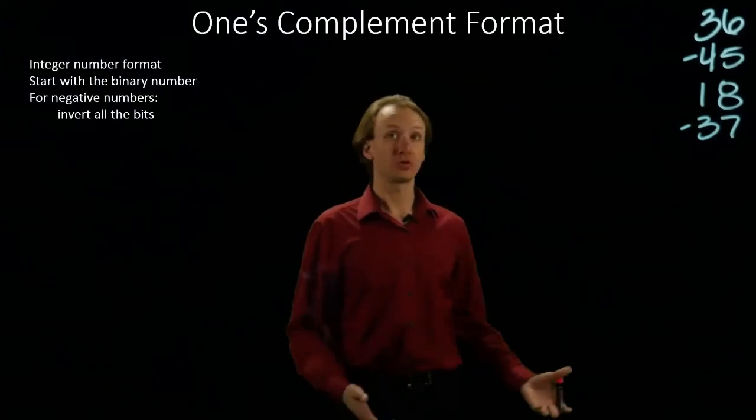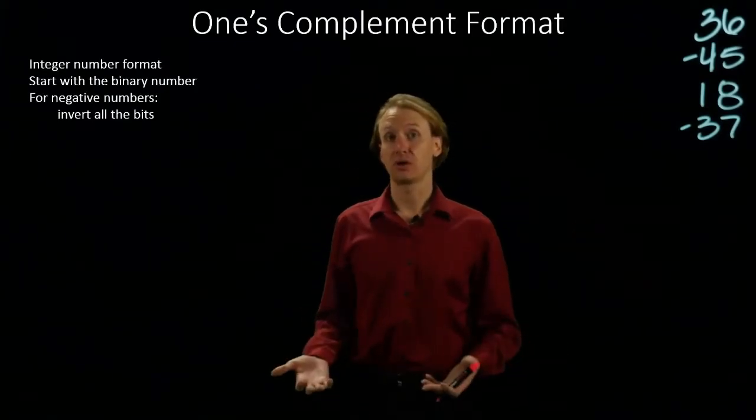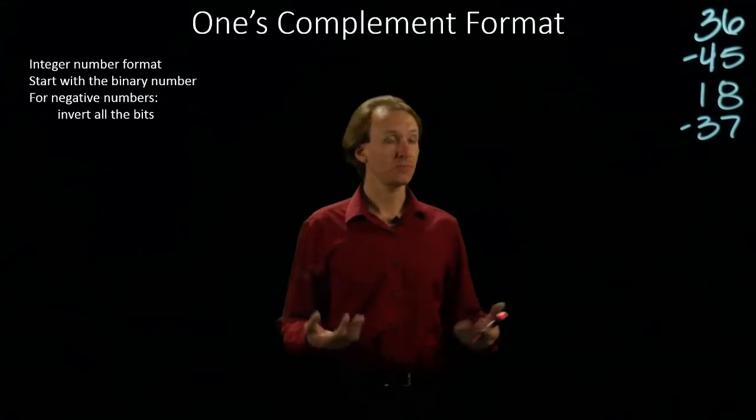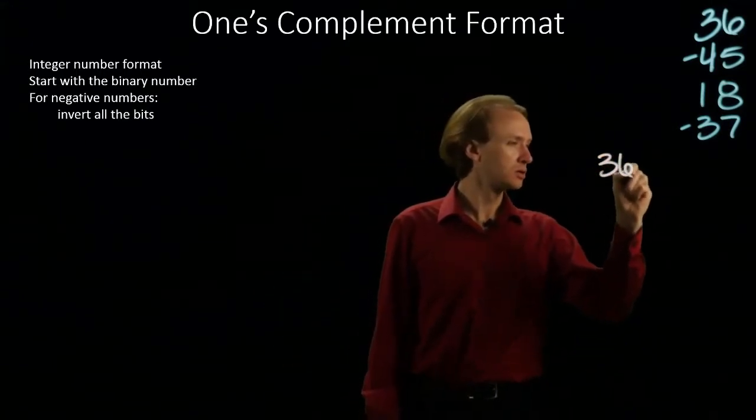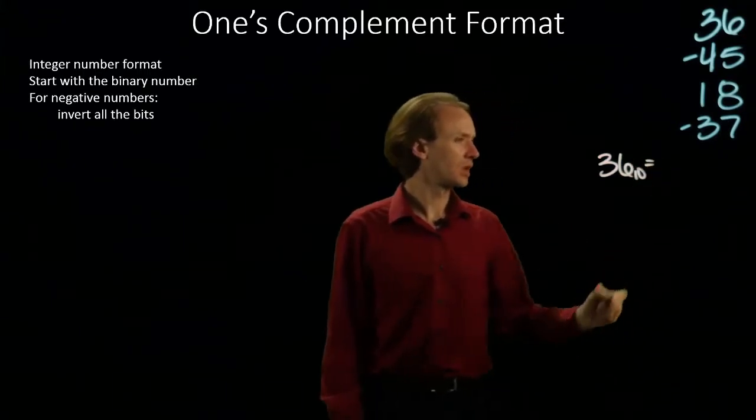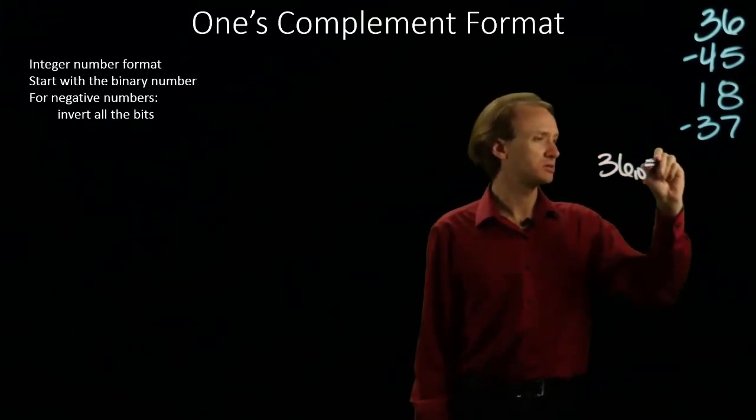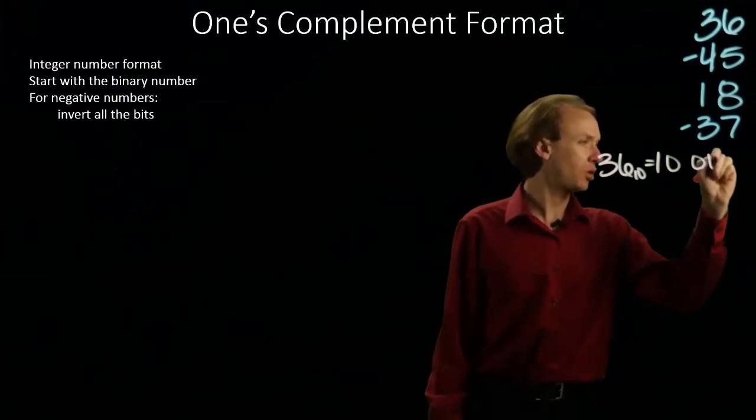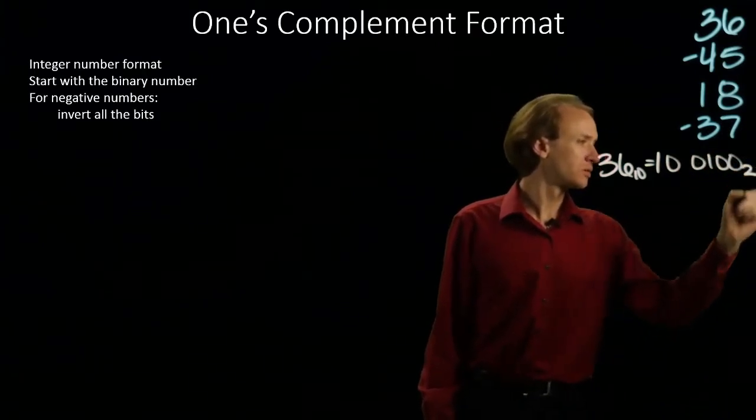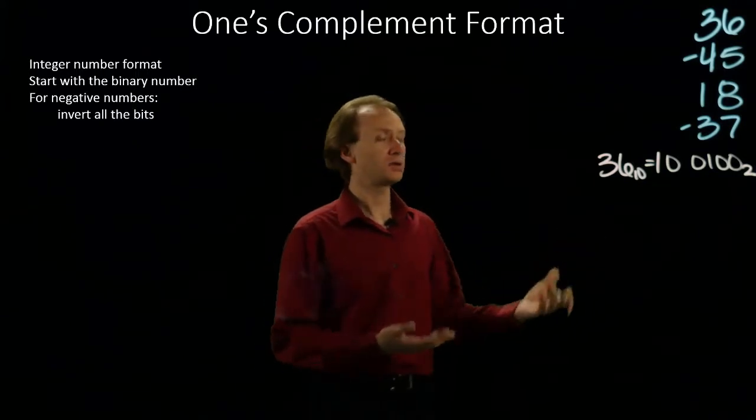Here I've got another four numbers that I'm just going to convert into the one's complement format. Our first number is positive 36. So 36 is 32 plus 4. So there's my number in binary.